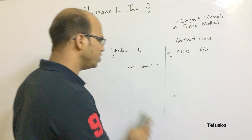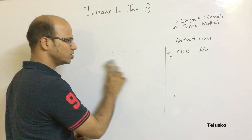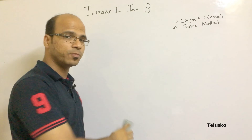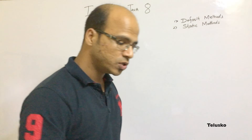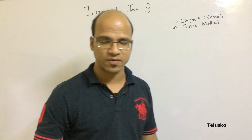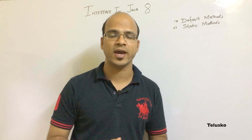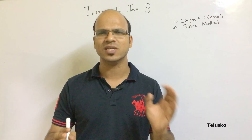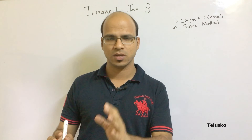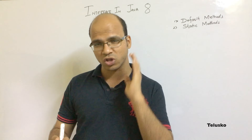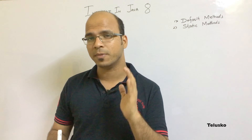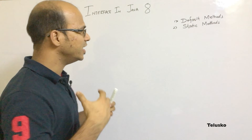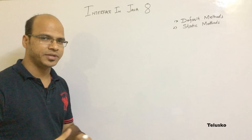So interface will have only abstract methods. That was the concept from Java 1.0 to 1.7 — we cannot define methods in an interface, we can only declare them. By default all methods of an interface will be public abstract.